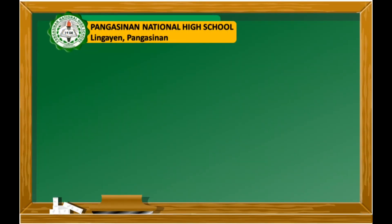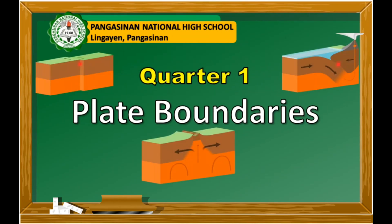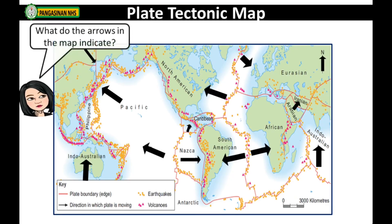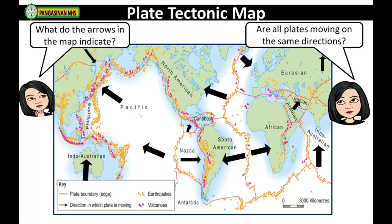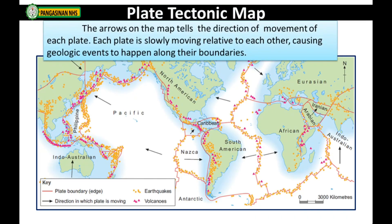For today's lesson, we will discuss the different types of plate boundaries. Examine the plate tectonic map. What do the arrows in the map indicate? Are all plates moving in the same direction? The arrows on the map show the direction of movement of each plate. Each plate is slowly moving relative to the others, causing geologic events to happen along their boundaries.